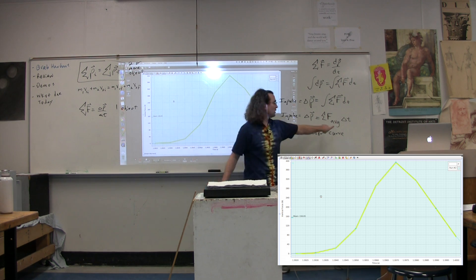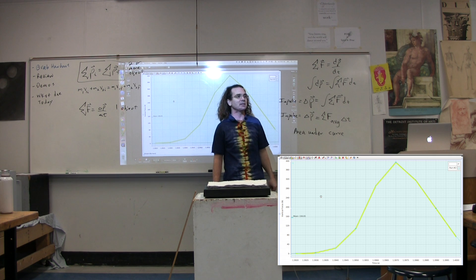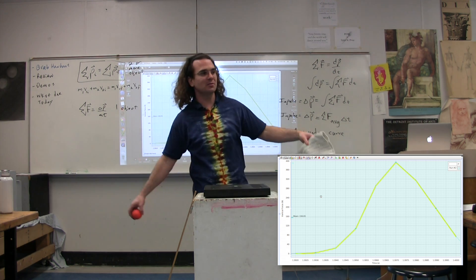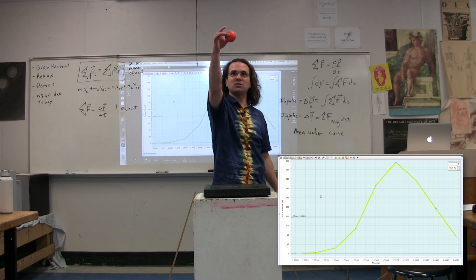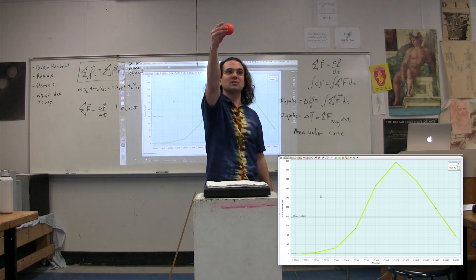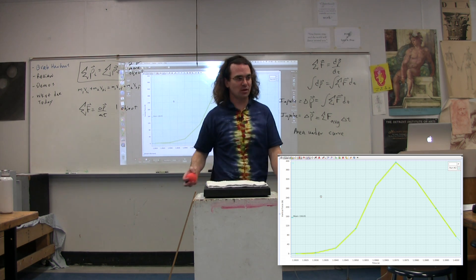We can't really look at it from here. We actually have to look at it from the change in momentum piece. So how is the change in momentum different during the collision without the helmet versus with the helmet?